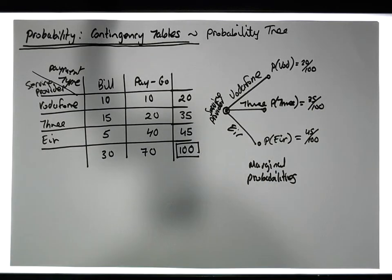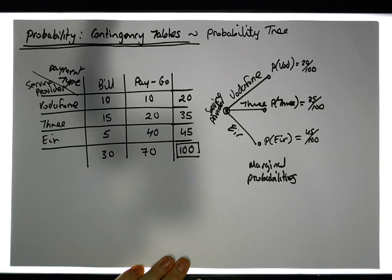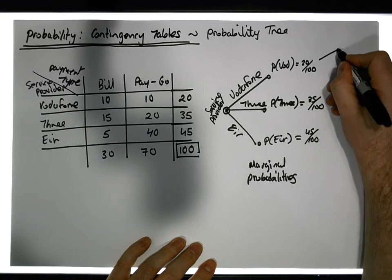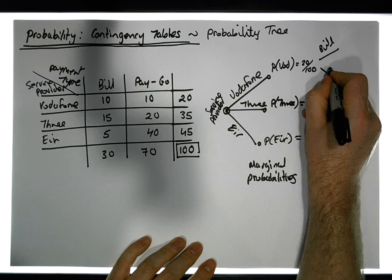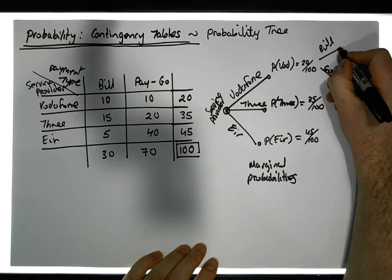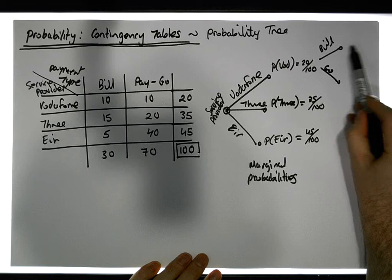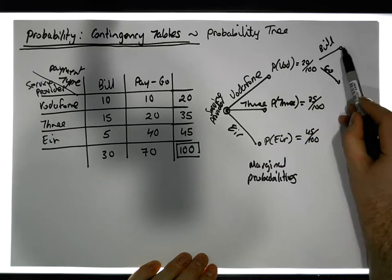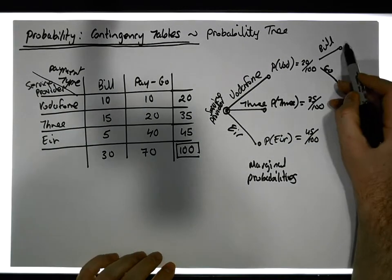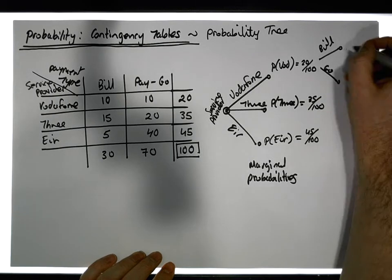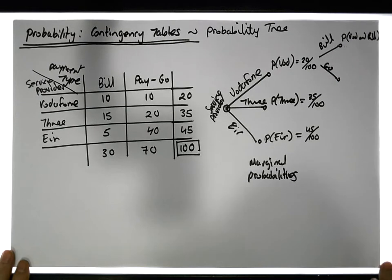Now, Vodafone customers can be sub-categorized into bill pay customers or pay as you go customers. So from the Vodafone branch, we have two sub-branches: bill pay and pay as you go. The probability calculated along this sub-branch is the probability that a person is both a Vodafone customer and a bill pay customer — that's the joint probability that goes on this branch.